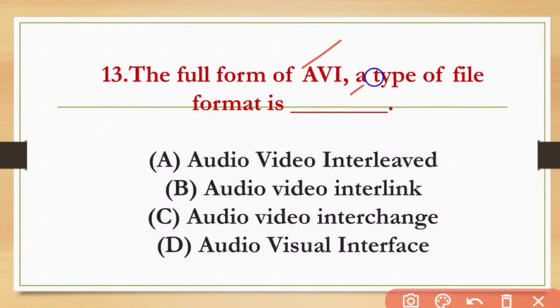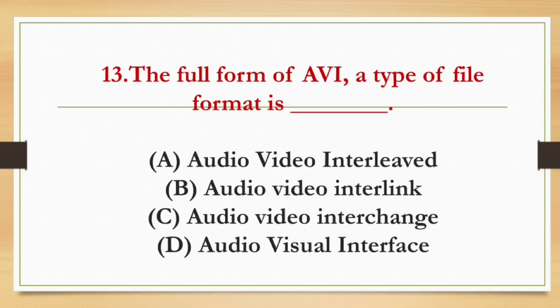The full form of AVI, a type of file format, is — the options are Audio Video Interface, Audio Video Interlink, Audio Video Interchange, and Audio Visual Interface. The answer is Audio Video Interchange.